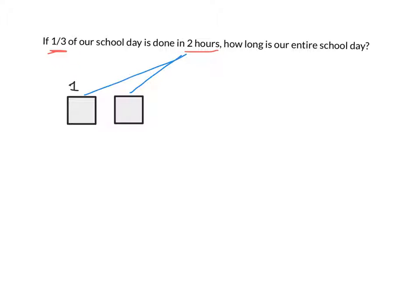If each one of these squares equals one hour and that is a third of our school day, we need to figure out how long the entire school day is. So now that we have all these divided out into thirds, you can see there's one, two, three - one, two, three in each, right? So what we can think of is that for every one-third of the day, that is two hours.